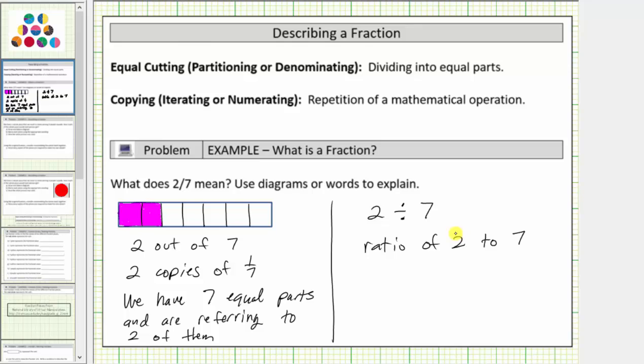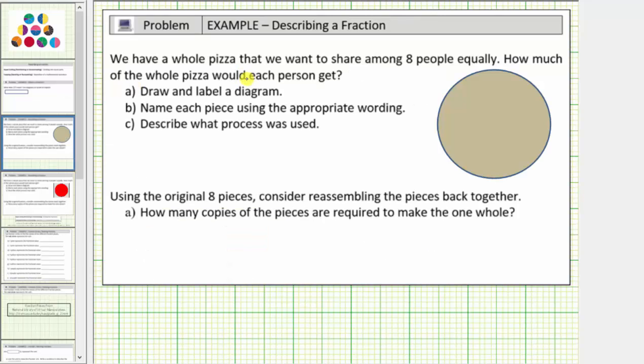Let's look at another example. We have a whole pizza that we want to share among eight people equally. How much of the pizza would each person get? A, draw and label a diagram. B, name each piece using the appropriate wording. And C, describe what process was used. So if there are eight people and we want to share the pizza equally,